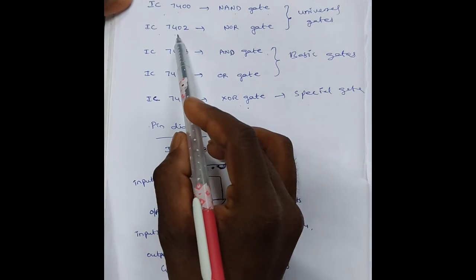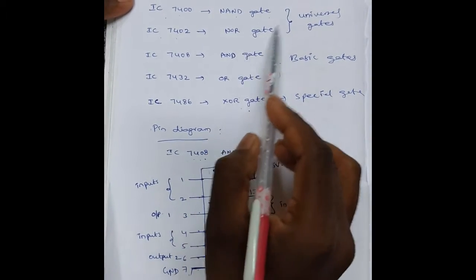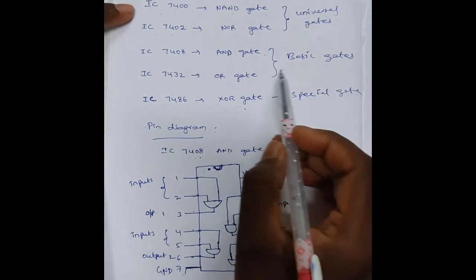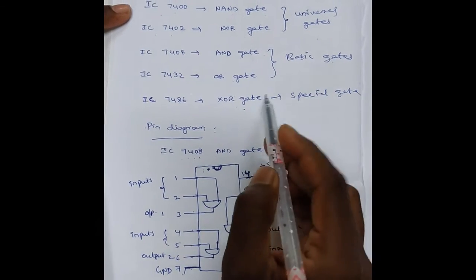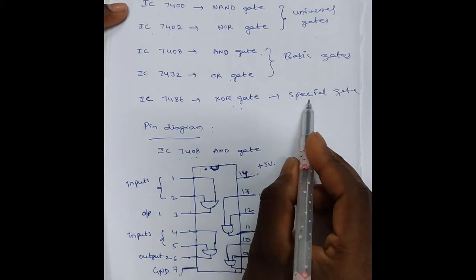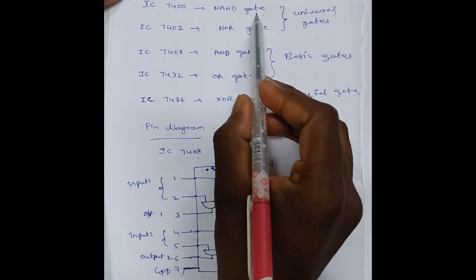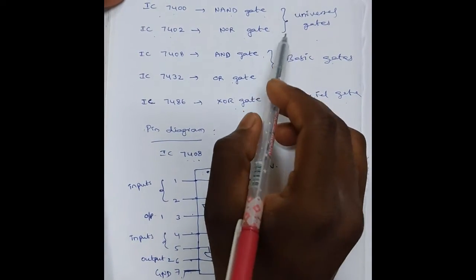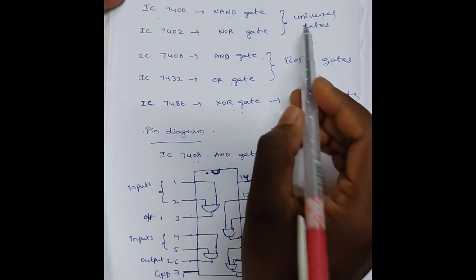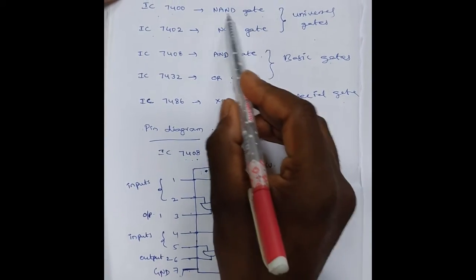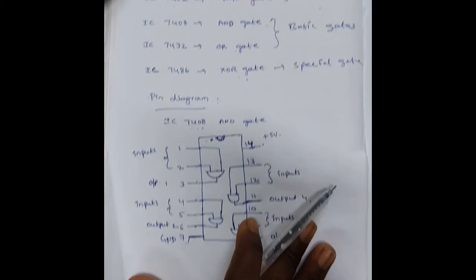NAND and NOR gates are universal gates. AND gate and OR gate are the basic gates. XOR gate is the special gate. By using these universal gates, we can implement any gates. That's why we are calling them universal gates.